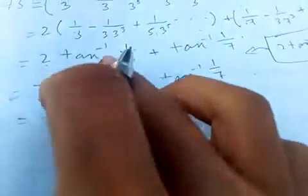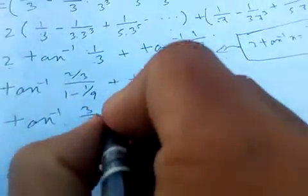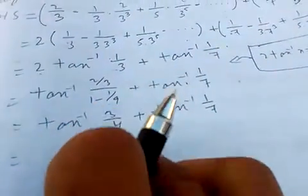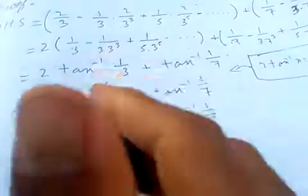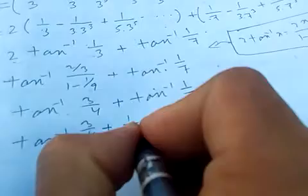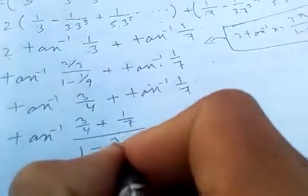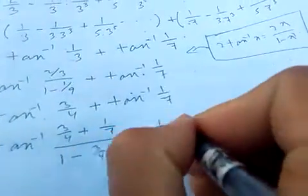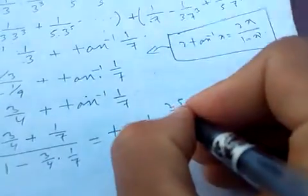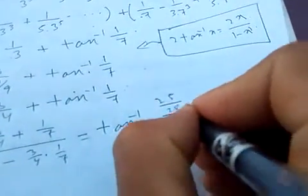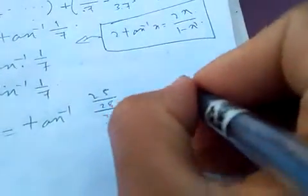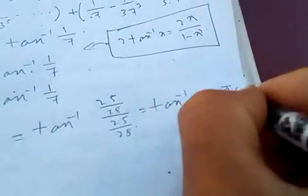If you simplify this, you will get arctan(3/4) plus arctan(1/7). Then arctan(3/4) plus arctan(1/7) is the same as arctan((3/4 + 1/7) / (1 − (1/7)·(3/4))). If you simplify this, you'll get arctan(1), which is π/4.